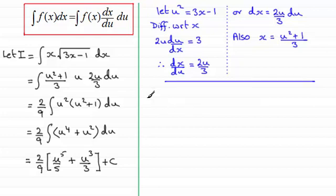Now what I've got is therefore the integral I is equal to 2/9. And I'm going to put the two fractions over a common denominator, that's going to be 15. And then I can see that times top and bottom by 3, then that's going to give me 3u to the power 5. And then for this third times top and bottom by 5, and that's going to give me 5u cubed over 15. And we've got plus c.